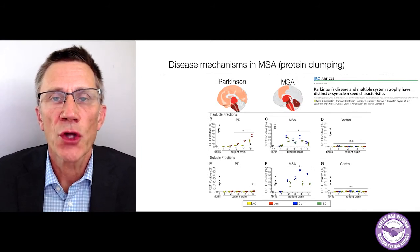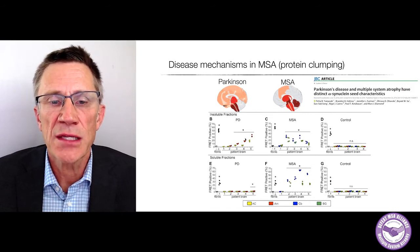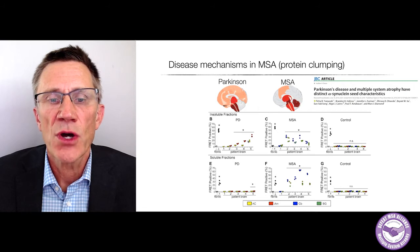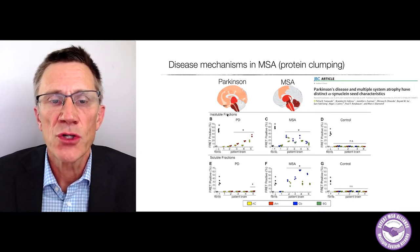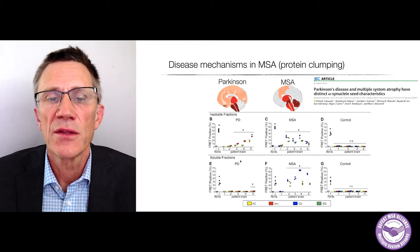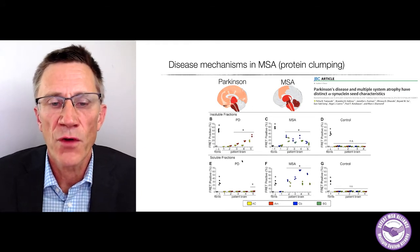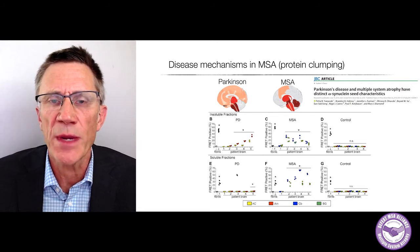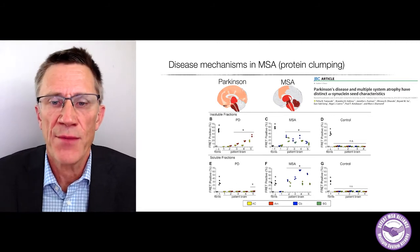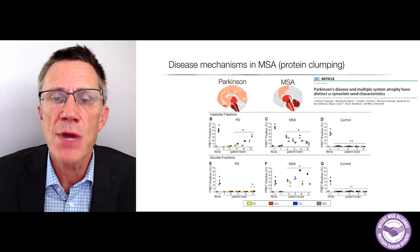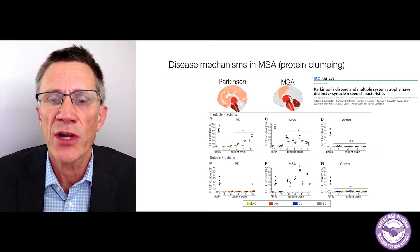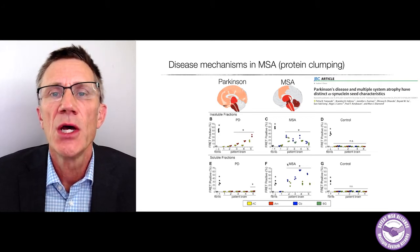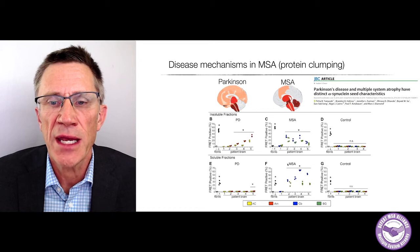Here are the Parkinson data from different patient brains. The higher the dots are on the diagram, the more aggregates there are. In some cases, there were aggregates coming from the Parkinson brain, especially from the insoluble fraction prepared from the brain. If they took the soluble fraction, there were no aggregates forming. Totally different with MSA.